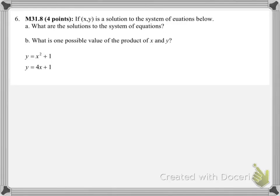Another system of equations problem, where Y equals two different things. Since Y equals both of those things, we can set each side equal: X squared plus 1 equals 4X plus 1.